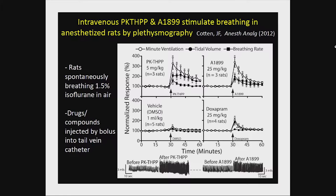Since doxapram stimulates breathing, we wondered if these drugs were also breathing stimulants. We injected them into the tail vein of spontaneously breathing anesthetized rats breathing isoflurane at 1 MAC (1.5%), measuring breathing by plethysmography. With injection of the Merck compound at 5 mg/kg, there was a really robust increase in minute ventilation — these rats are breathing like crazy. That's largely due to an increase in minute ventilation but also respiratory rate. A1899 and doxapram were not as potent or effective as breathing stimulants.